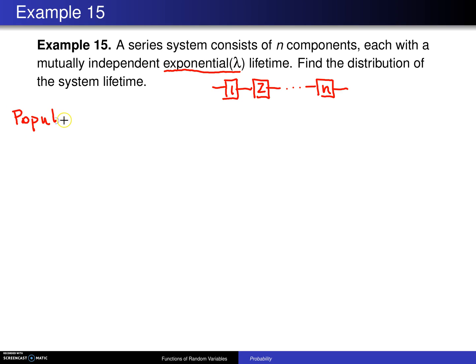In this setting, the population distribution has probability density function f of x equals lambda e to the minus lambda x for x greater than 0, and that's the failure rate. That comes from chapter 5. We are interested in the first component to fail.